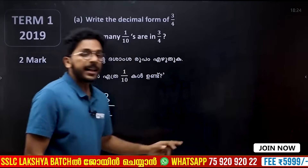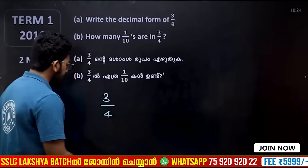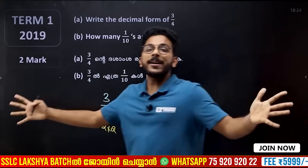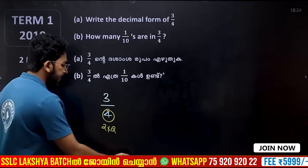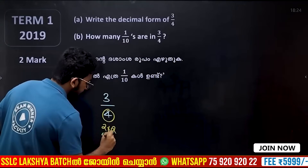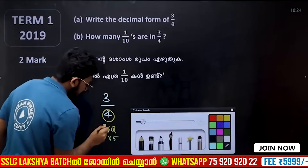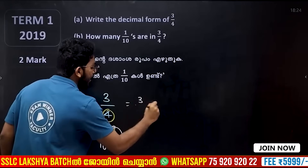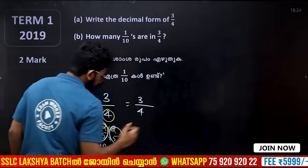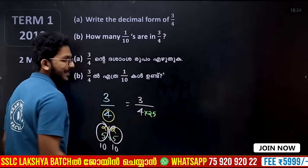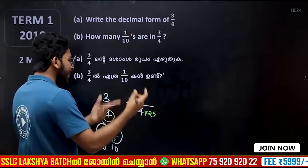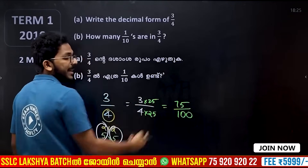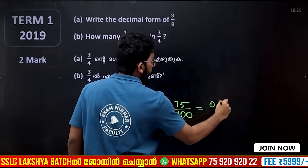How to write the decimal form of 3 by 4: 2 × 2. If you want to write the decimal form, 1 and 2 is the same, 1 and 5 is the best friend, 2 and 5 is the same. So 3 by 4: multiply 5 and 5 to get 75 divided by 100. The decimal form is 0.75.